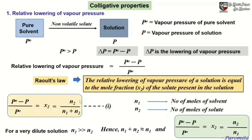To calculate the mole fraction of the solute, let n1 be the number of moles of solvent and n2 be the number of moles of solute. So x2 = n2 / (n1 + n2). Now for a very dilute solution, n1 is much greater than n2, hence we can assume n1 + n2 ≈ n1. So (P0 minus P)/P0 becomes approximately equal to n2/n1.